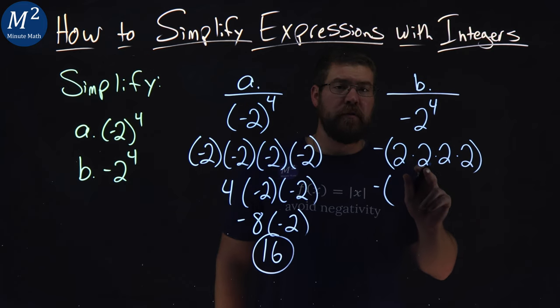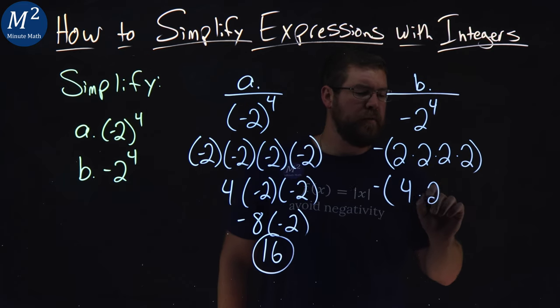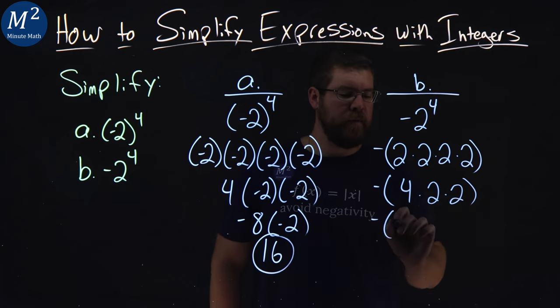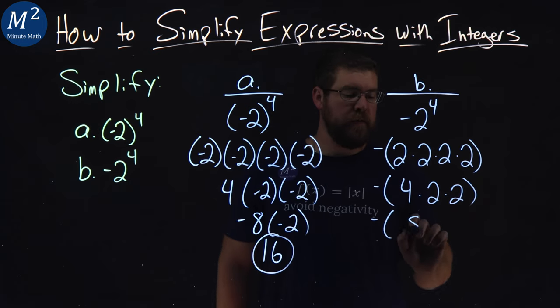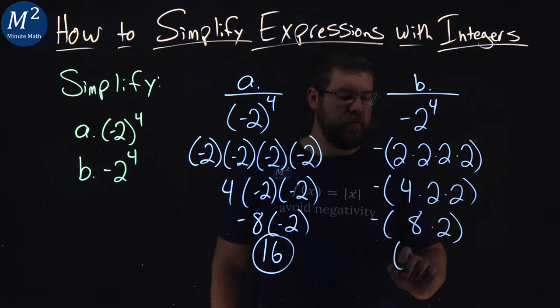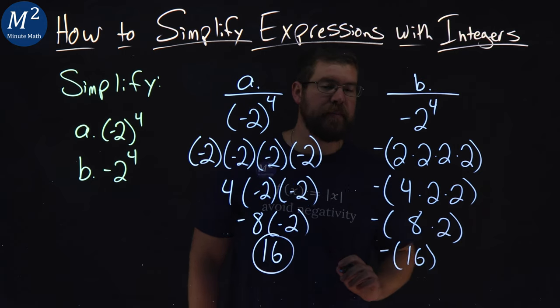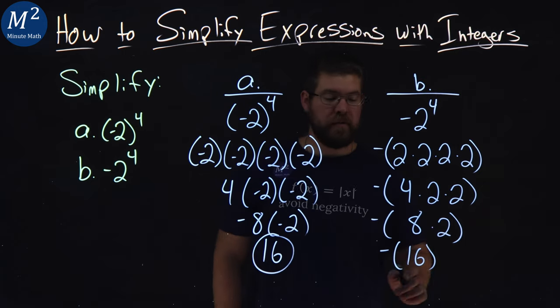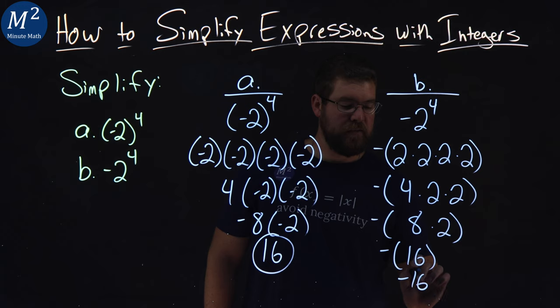So the negative stays there and two times two inside the parentheses is four times two times two. Keep breaking it down. Four times two is eight times two. And then eight times two in the parentheses is a 16. And a negative times a 16 is a negative 16.